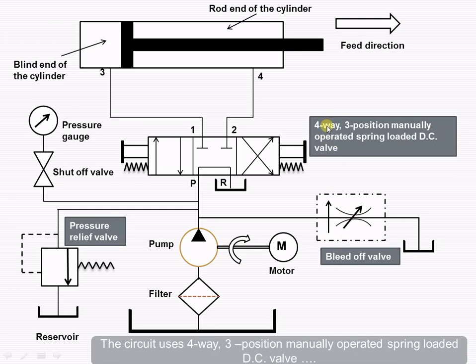The circuit uses a 4-way 3-position manually operated spring-loaded direction control valve. These 4 ways are nothing but 4 ports which we have shown over here: P, R, 1, and 2. These are the 4 ports, and there are 3 positions.